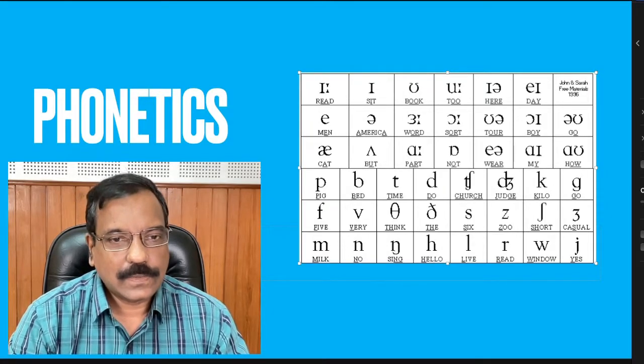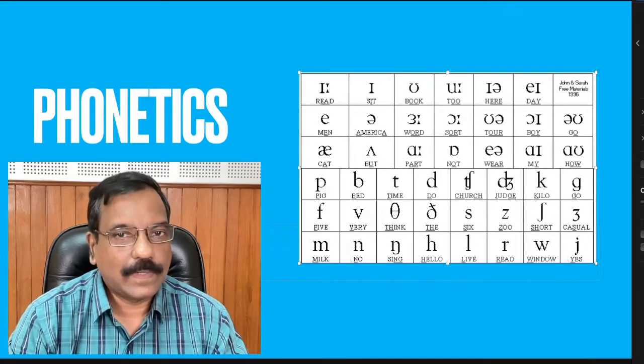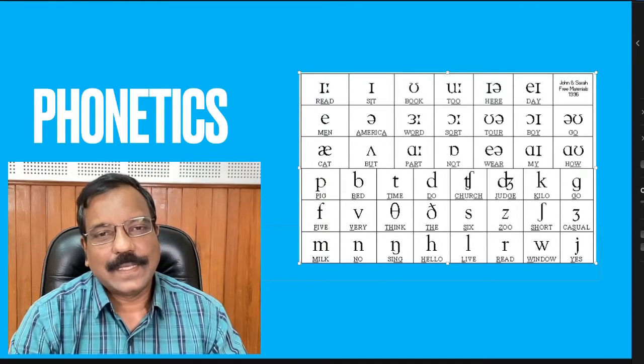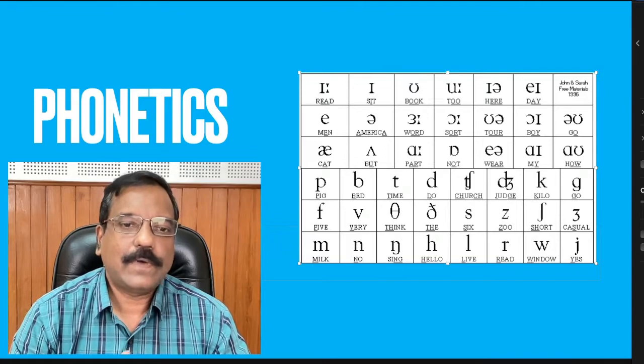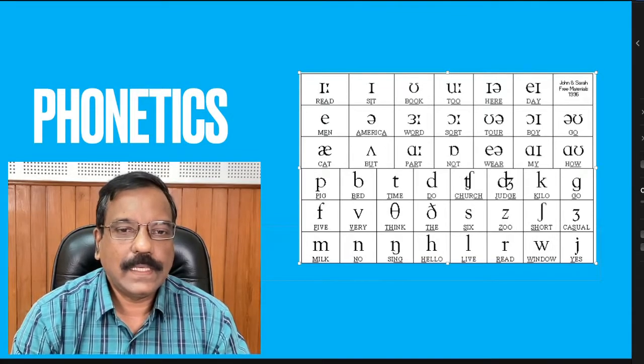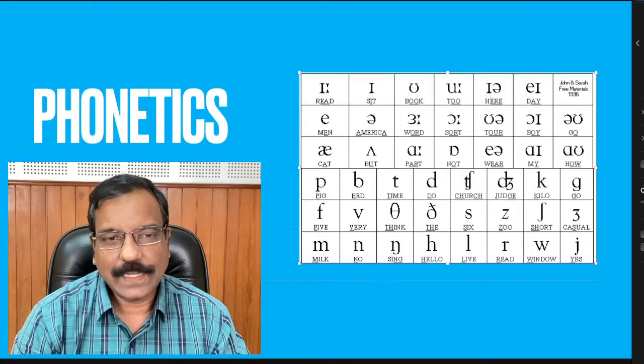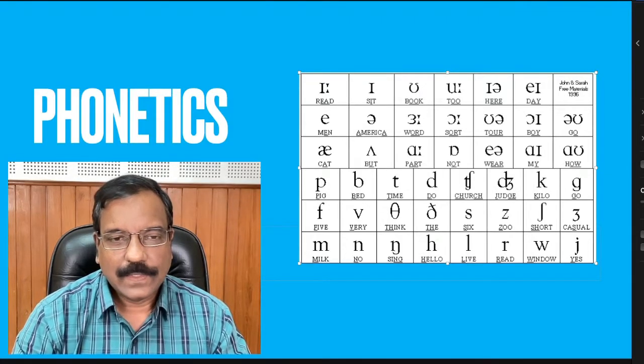For example, we say there are only 5 vowels in English, but actually there are 20 vowel sounds in English when we try to speak English. The 5 vowels that we speak of - A, E, I, O, U - are only the letters indicating the vowels.